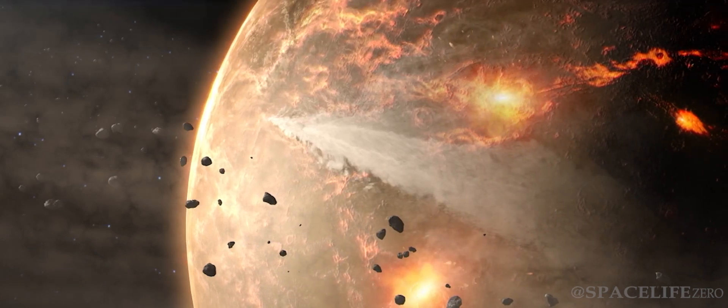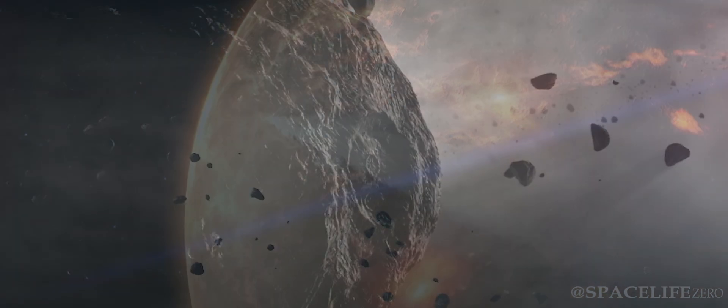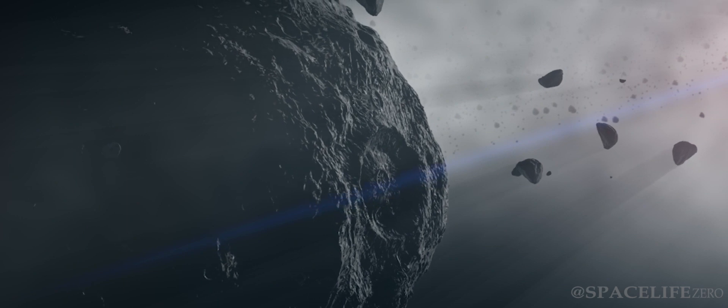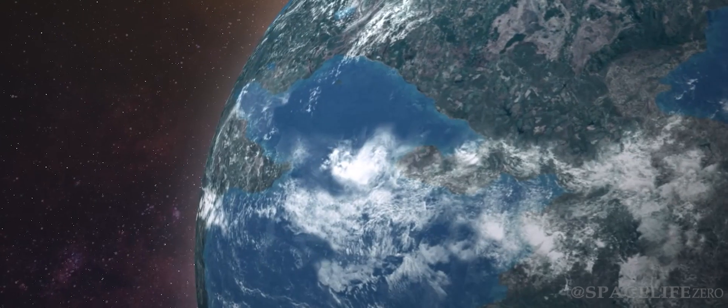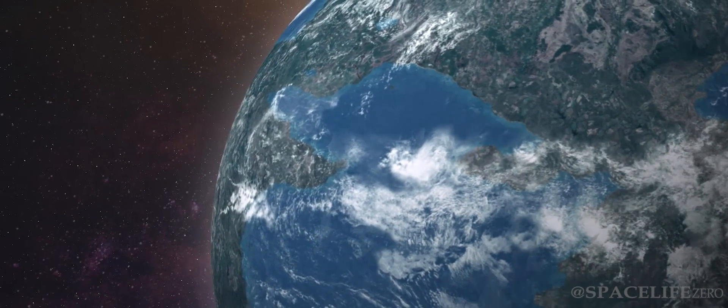Asteroid impacts are a continuously occurring natural process. Every day about 80 to 100 tons of material falls upon Earth from space, in the form of dust and small meteorites.